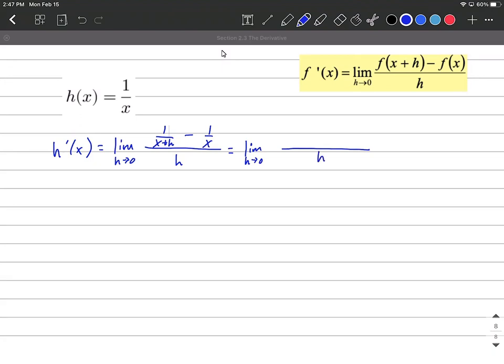So we can leave the h in the denominator for now. It would be more simplified if instead of two separate fractions in the numerator, we combine these together into a single fraction. To do so, we need to get a common denominator. So that common denominator is going to have both an x and an x plus h.